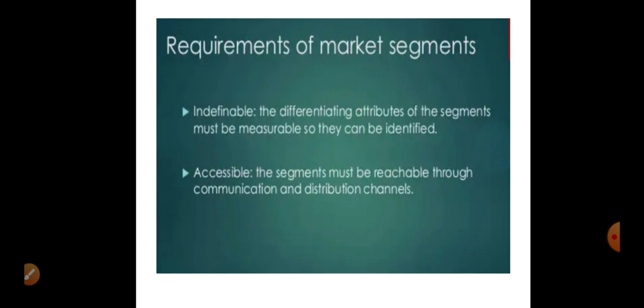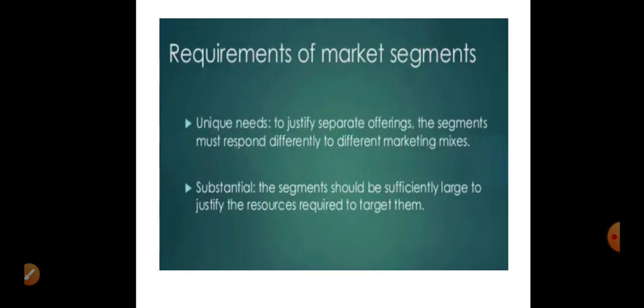The second requirement is accessible. You can subdivide the market into many different groups, but you have to make sure it is reachable — that communication, product, and distribution channels are reaching the different segments. Only reachable, accessible segments will give you profit.